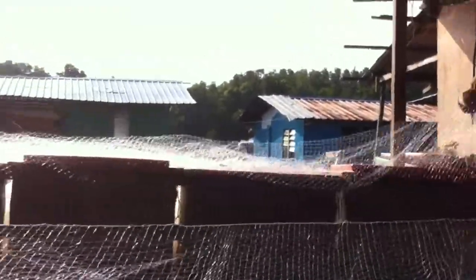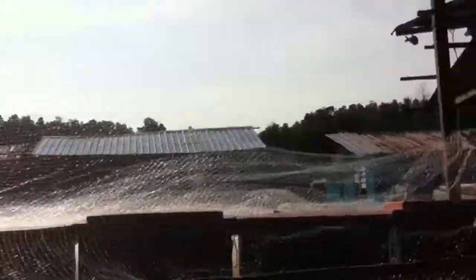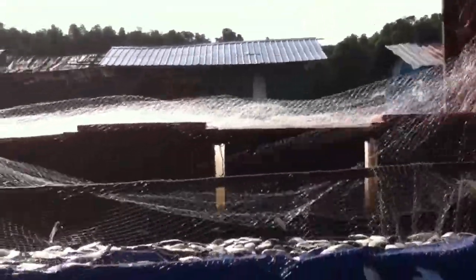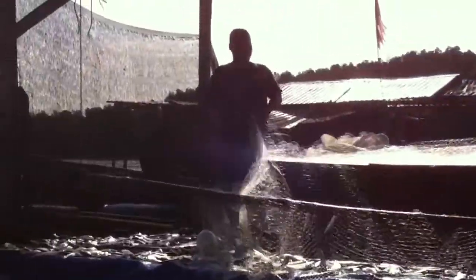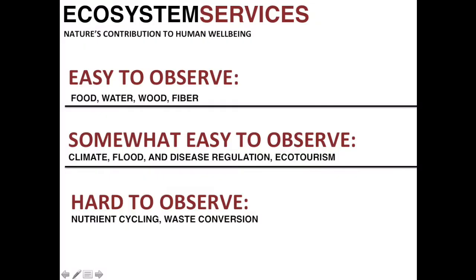Our approach to mitigating some of this social conflict between stakeholders focuses on valuing the ecosystem services of the environment communities live and work in. Ecosystem services are anything nature does to increase human well-being. Some ecosystem services are very easy to see, such as shrimp and fish production and provisioning of fresh drinking water.